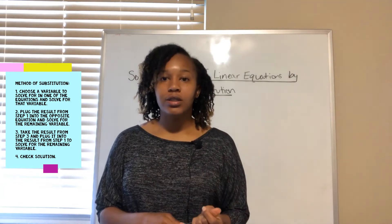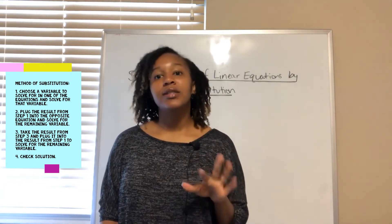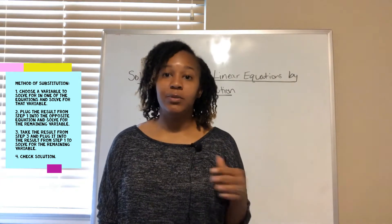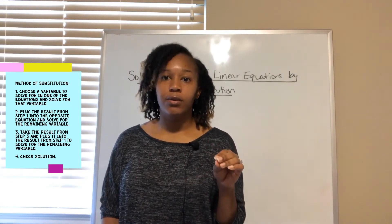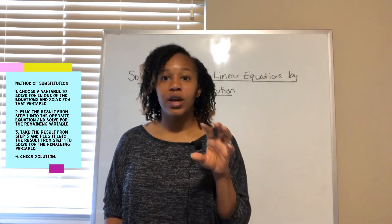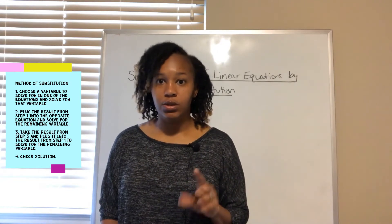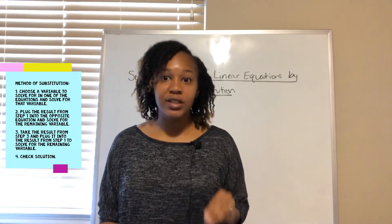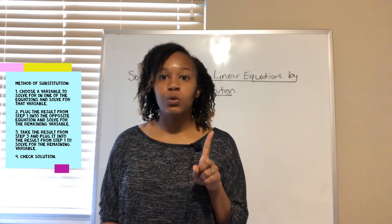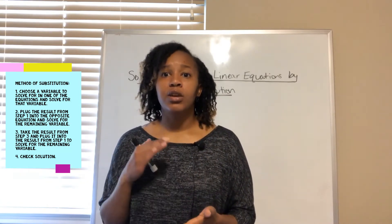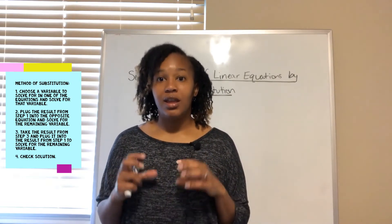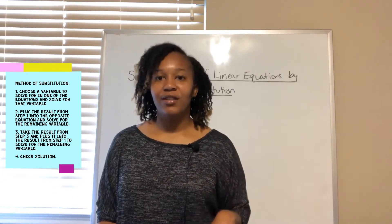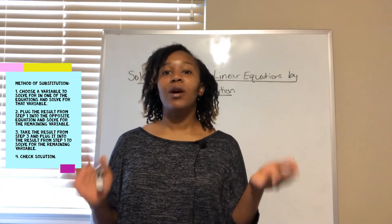The method of substitution involves several steps. First, pick a variable to solve for — you can solve for either variable, but the hint is to pick the variable that doesn't have a coefficient in front, as that makes it easier. Once you solve for that variable in one equation, step two is to take that result and plug it into the opposite equation. That gives you one equation with one variable, which you then solve. Finally, take that result and plug it back into your result from step one to find the other variable, then check your answer.